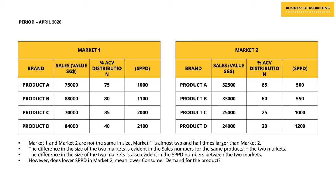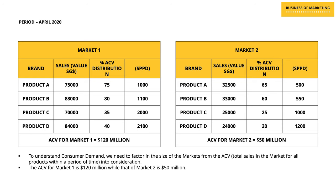To understand the concept of sales per million, I'll take the help of another example. I've taken market one from the previous example and added another smaller market known as market two. Market one and market two are not the same size — market one is almost two and a half times larger than market two. The difference in size is evident in the sales numbers and also in the SPPD numbers between the two markets. However, when it comes to percentage ACV distribution between the products in the two markets, the difference is not that huge. The key question is: does lower SPPD in market two mean there is much lower demand for the products in market two?